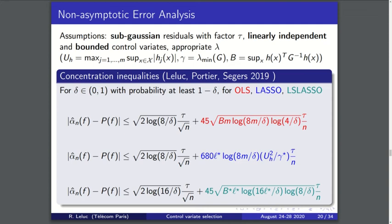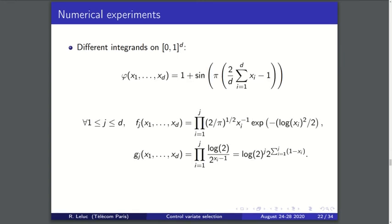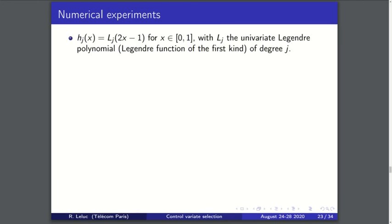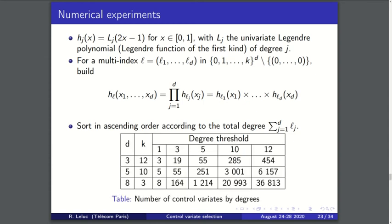Finally, some numerical experiments. We will focus the study on the unit cube in dimension d with functions that have been normalized to one. We compare the different methods—the OLS, the lasso, and the least square lasso. We used some Legendre polynomials as the control functions and we increase the number of control functions to see the effect of adding more and more control functions and perform the selection of those control functions.